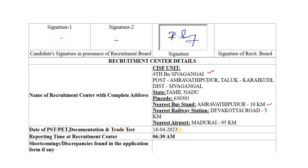You can see the physical test, documentation, and trade test details. You can see the candidate information on CSF. The reporting time is on the RRN. You can see the RRN — this process will start. The description of the application is found here.